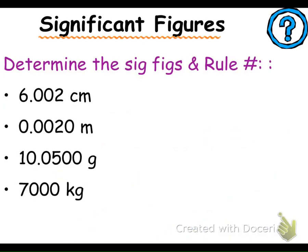Let's look at determining significant figures. In this first one we've got four significant figures, and this would be rule two — a zero sandwich. Now what I want you to do is hit pause, try to identify those other significant figures, the amounts, and the rules, and then hit play again and you'll listen to the explanation. Hopefully you hit pause on the video and now you're looking at how many significant figures are in these next ones.